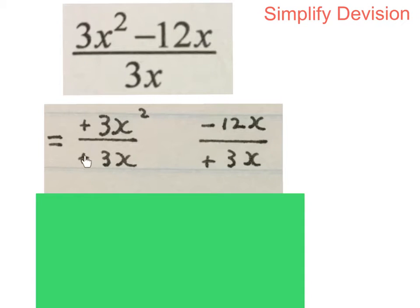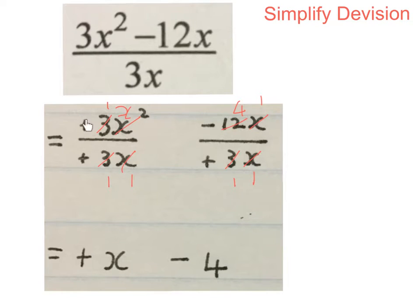Firstly, this plus divided by this plus will give me a plus. Then I cancel: 3 goes into 3 once each side, and X goes in here once leaving one X remaining. On the other side, 3 goes in here once and 3 goes into 12 four times. Cancel the X's — X goes in once each side. This minus and the plus divided together give me a minus. So a plus divided by a plus leaves X, and a minus divided by a plus is a minus, leaving 4.